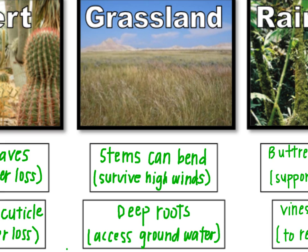Grassland plants also need to have deep roots because they're trying to get water from groundwater reservoirs underground. They need to be able to reach down and get water that's soaked down because they don't get rain very often.